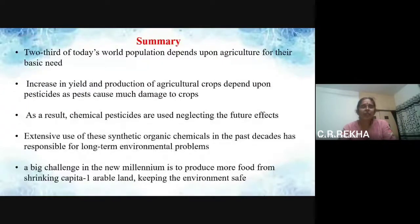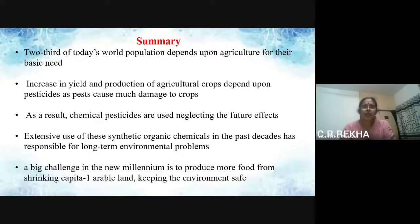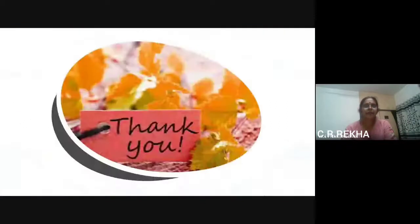To summarize this topic: two-thirds of today's world population depends upon agriculture for their basic needs. Increase in yield and production of agricultural crops depends upon pesticides as pests cause much damage to crops. As a result, chemical pesticides are used neglecting the future effects. Extensive use of these synthetic organic chemicals in the past decades has been responsible for long-term environmental problems. So a big challenge in the new millennium is to produce more food while keeping the environment safe. Thank you.